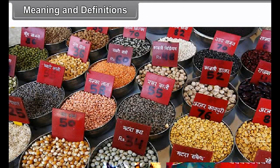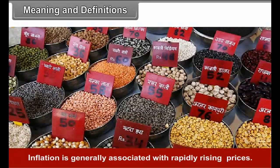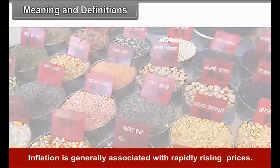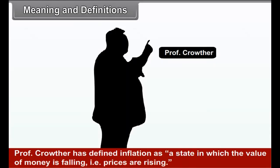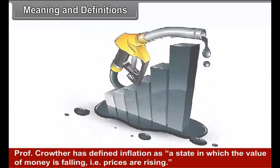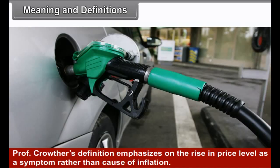Meaning and Definitions. Inflation is generally associated with rapidly rising prices. In simple terms, inflation is a decline in purchasing power due to an increase in prices. Prof. Crowder has defined inflation as a state in which the value of money is falling, i.e., prices are rising. Crowder's definition emphasizes the rise in price level as a symptom rather than a cause of inflation.